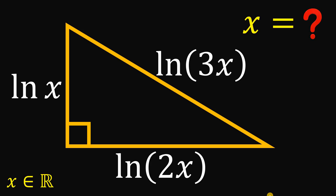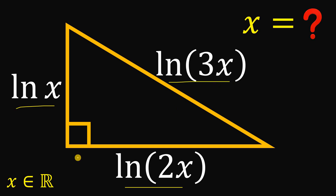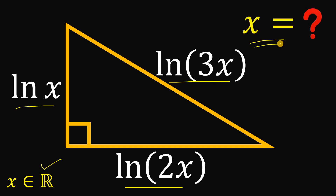Can you solve this math challenge? Here's the question. Given a right triangle with side lengths of ln x, ln 2x, and ln 3x, where x is a real number, our goal is to find the value of x. You can pause this video if you want to give this problem a try.